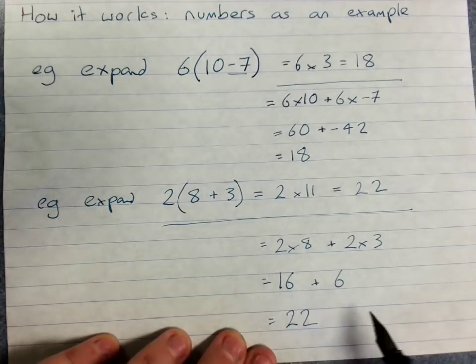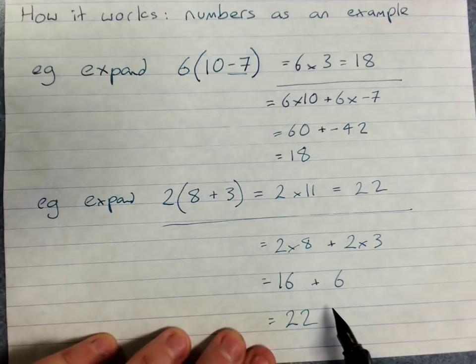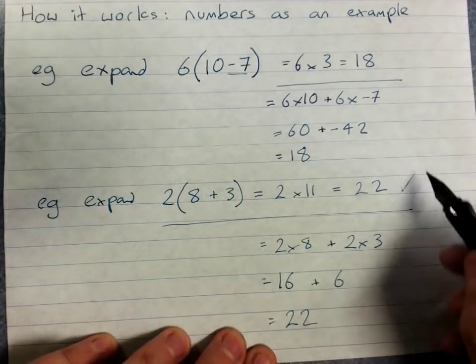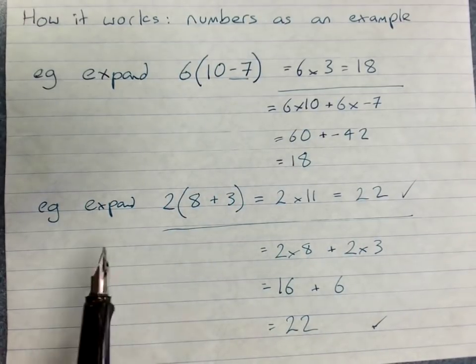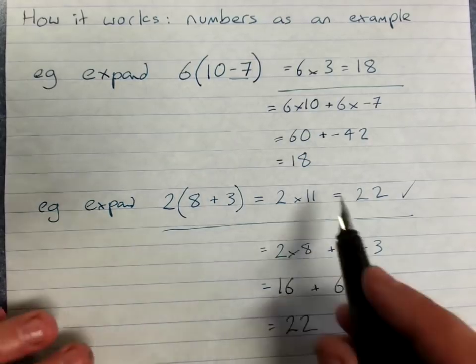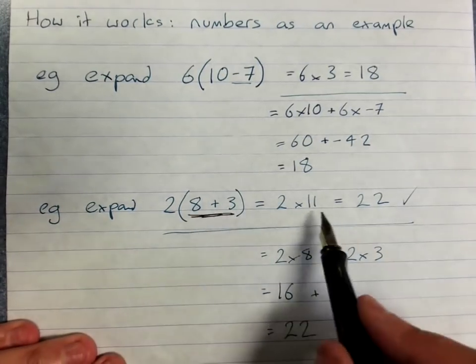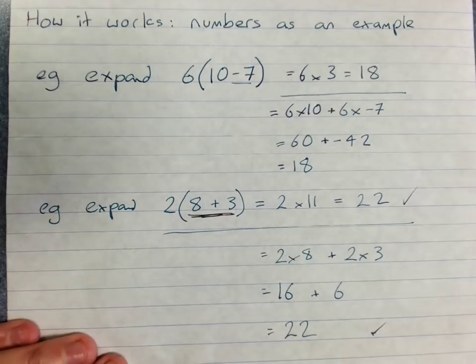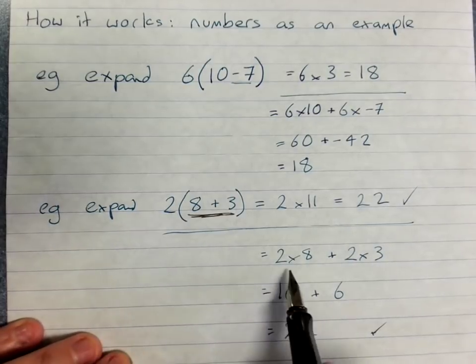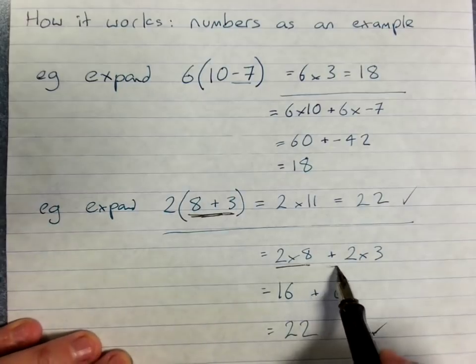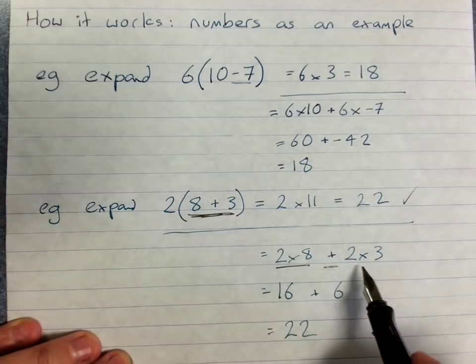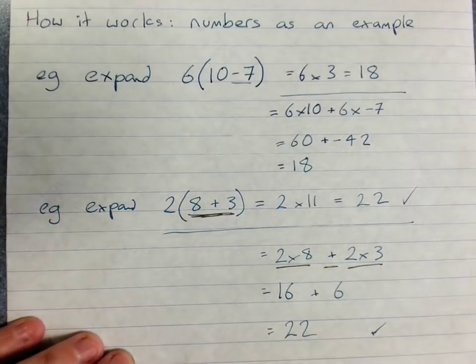I know this is a harder way of doing it, but it does get the same answer. What that shows us is I'm allowed to solve this either way. I am allowed to do the sum first and then just multiply, or I'm allowed to do the thing outside times the first thing in the brackets, plus the thing outside times the second thing in the brackets, and I'll still get the same answer.